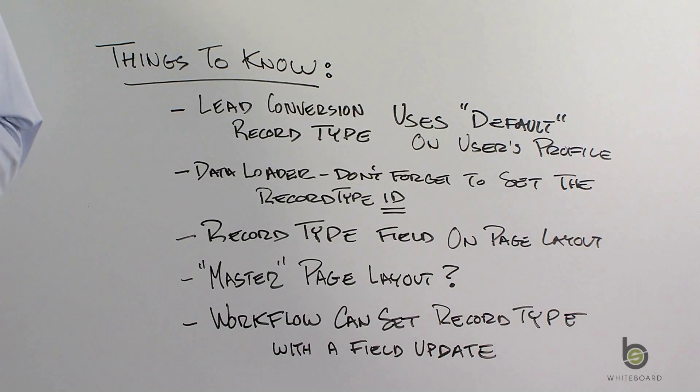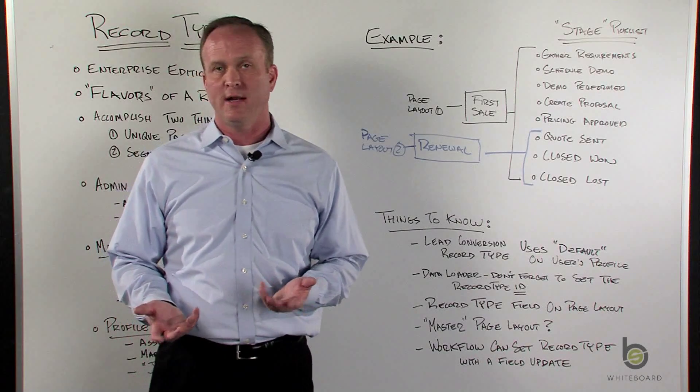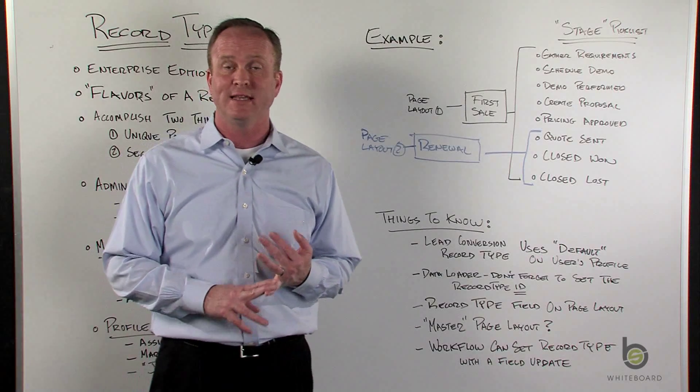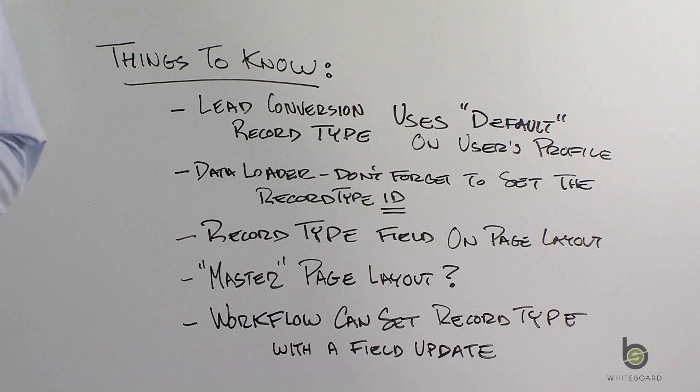Okay. Now that we've gone through an example, let's go through a session called Things to Know, which is really the gotchas that you need to be aware about as a system admin. The first thing I want to talk about is lead conversion. So let's go through the scenario that you have three opportunity record types and a user is converting a lead. So the question is, which record type is going to be set on lead conversion?